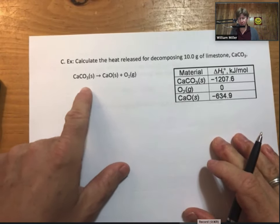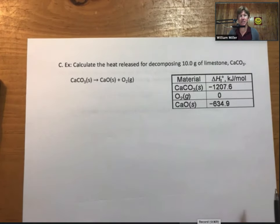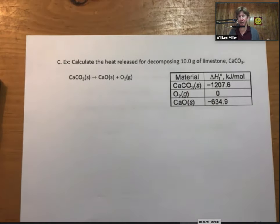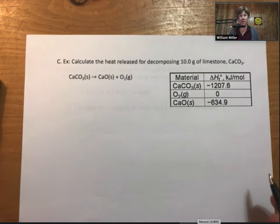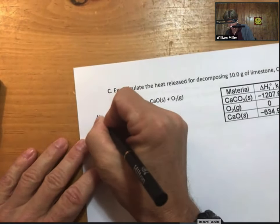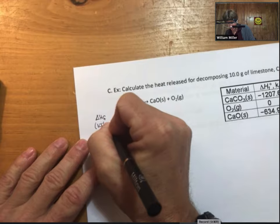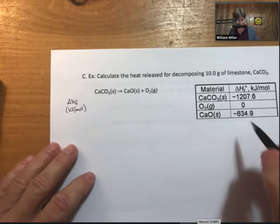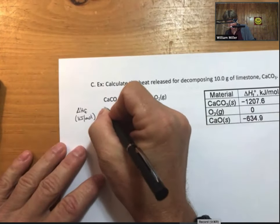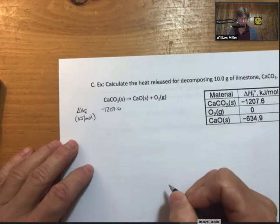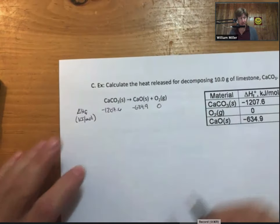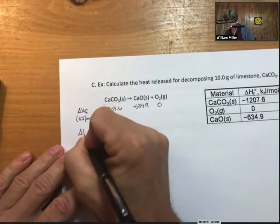Let's do another one. Calculate the heat released for decomposing 10.0 grams of limestone calcium carbonate. In this particular problem, very typical, you have to calculate delta H reaction from delta HF values and then use that for stoichiometry. My system is to write the delta HF values underneath each of them: calcium carbonate, calcium oxide, oxygen is zero.